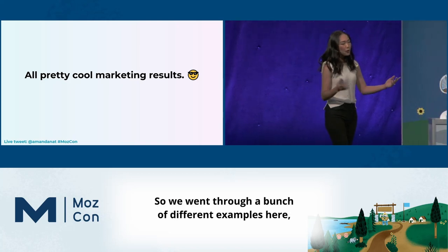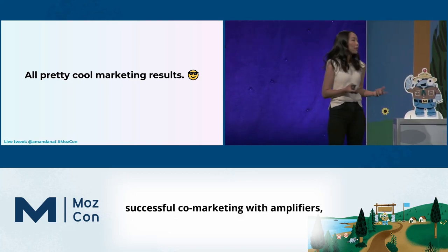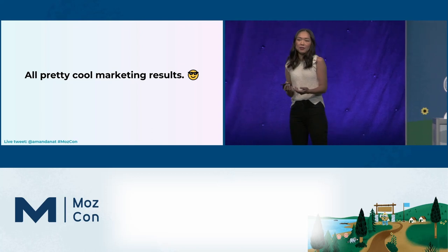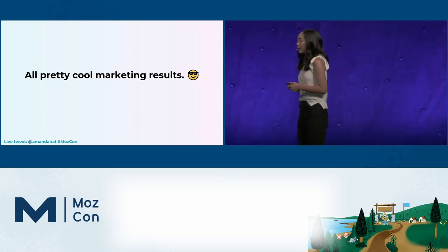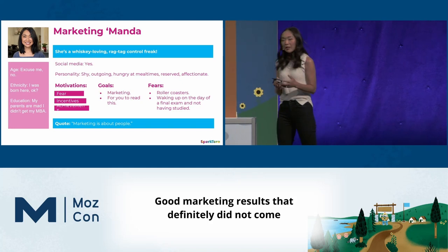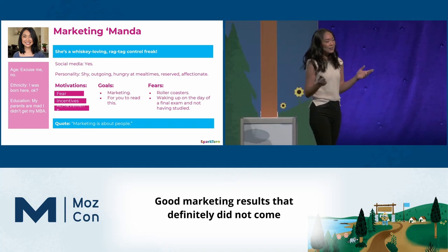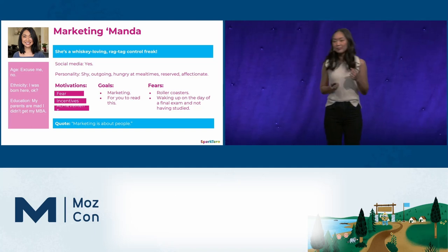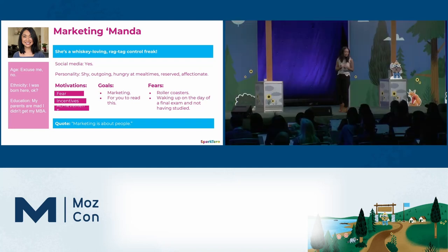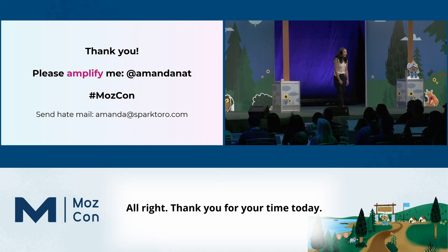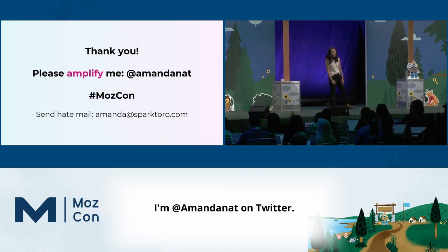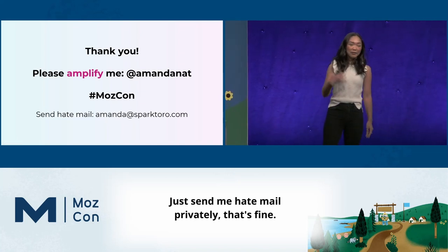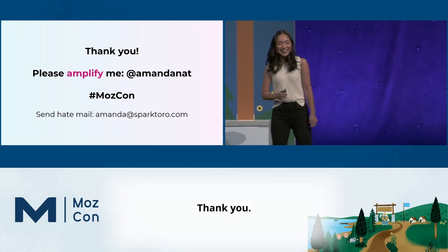We went through a bunch of examples here: successful co-marketing with amplifiers, building businesses with amplifiers, and creating news that captures attention. All pretty cool marketing results that definitely did not come from a classic buyer persona template. Thank you for your time today. If you enjoyed this talk, please amplify it — at Amanda Nat on Twitter. If you didn't like it, just send me hate mail privately. Thank you.